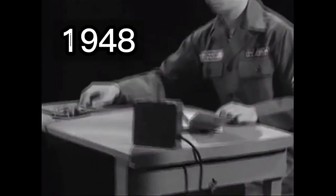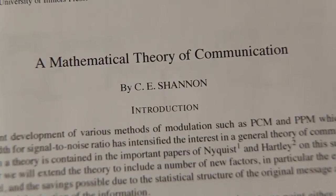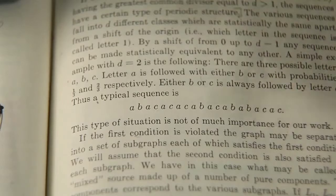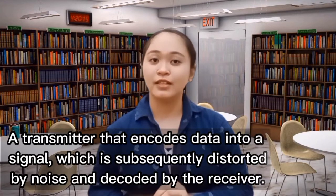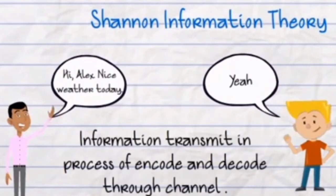In 1948, the publication of Claude Shannon's 'A Mathematical Theory of Communication' was created to find practical ways to make better, more efficient codes and find the limits on how fast computers could process digital signals. In a given set of possible events, the information contained in a message describing one of these occurrences quantifies the symbols required to encode the event in the most efficient manner. His hypothesis is based on a simple yet powerful communication model — a transmitter that encodes data into a signal, which is subsequently distorted by noise and decoded by the receiver.